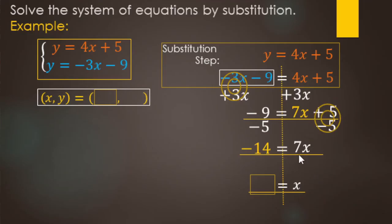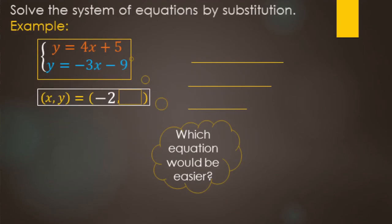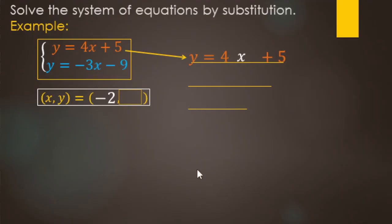We undo the multiply by 7 with a divide by 7 on both sides. Negative divided by positive: negative 14 divided by 7 makes negative 2, and 7 over 7 is just 1x. So the x value for this system is negative 2. Next we find the y value — we can choose either equation, and we'll pick the top one since it has two positives and looks slightly simpler.